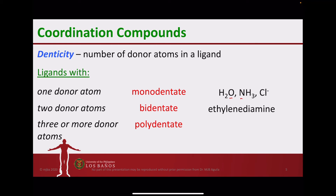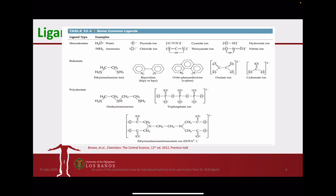You can be more specific depending on the number of donor atoms: three is tridentate, six is hexadentate, but collectively you can call them polydentate. An example of a polydentate ligand is ethylenediamine tetraacetic acid (EDTA). These are some common ligands arranged by their number of donor atoms — monodentate, bidentate, and polydentate.